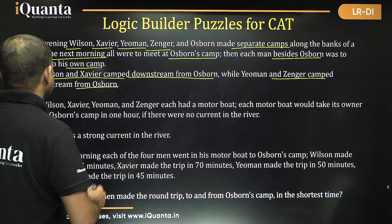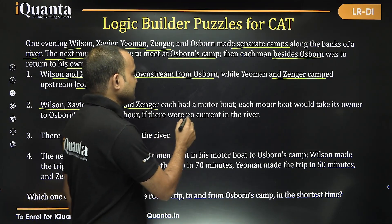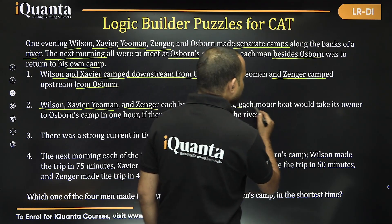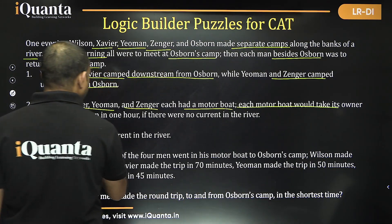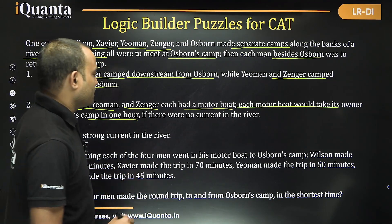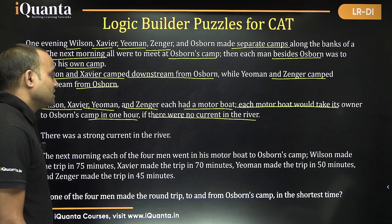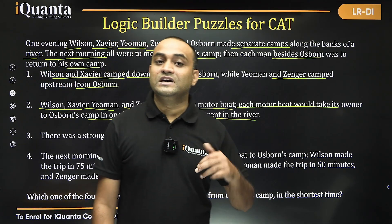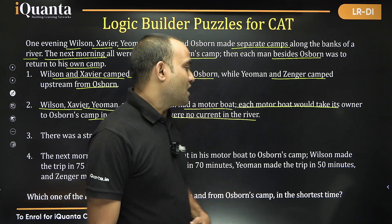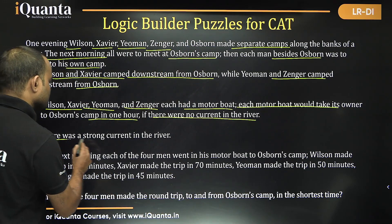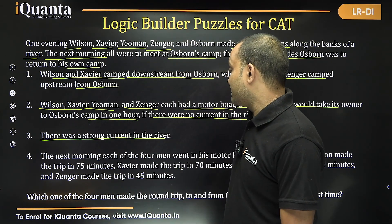Wilson, Xavier, Yeoman, and Zenger each had a motorboat. Each motorboat would take its owner to Osborne's camp in exactly one hour if there were no current in the river. But there was a strong current in the river.